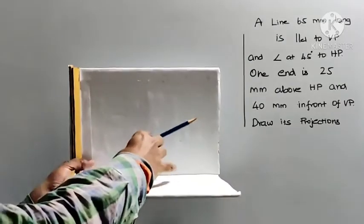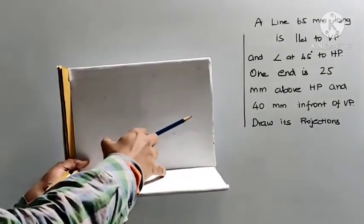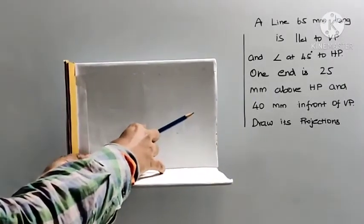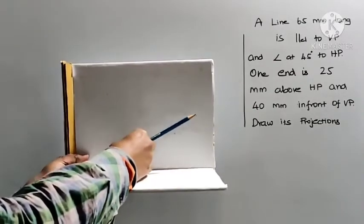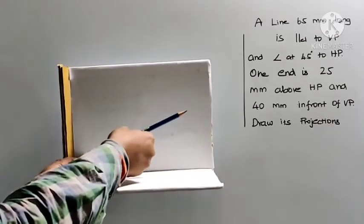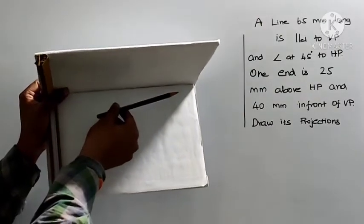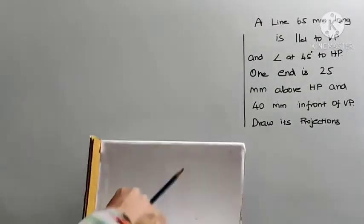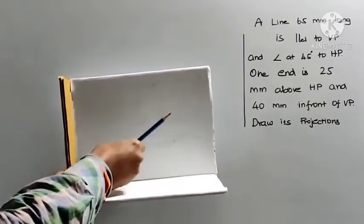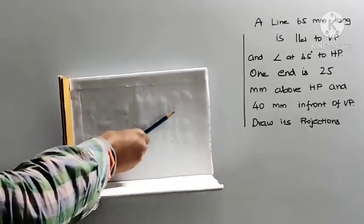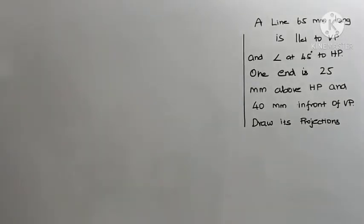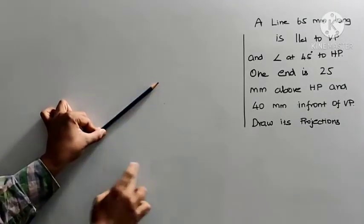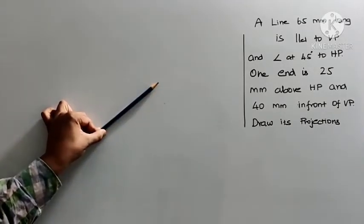If you look at this, let's name this line AB, and let's take this end as end A. End A is 25mm above HP, so that 25mm distance will be visible in the front view. And 40mm in front of VP, so that 40mm will be visible in the top view. In this particular question, if you look at the front view, you will get the true length of the line. Whereas in the top view, you will get the projected length, which will be shorter than the true length.